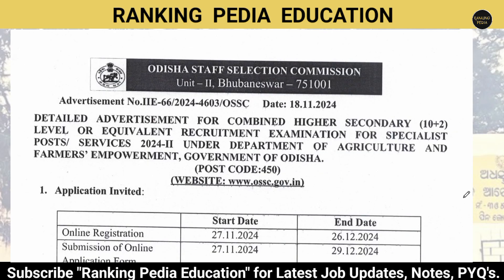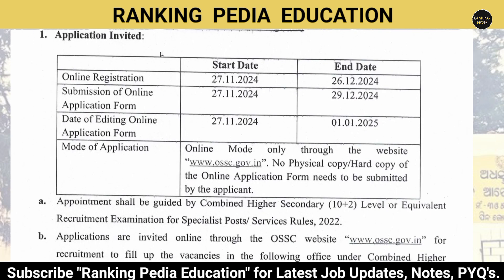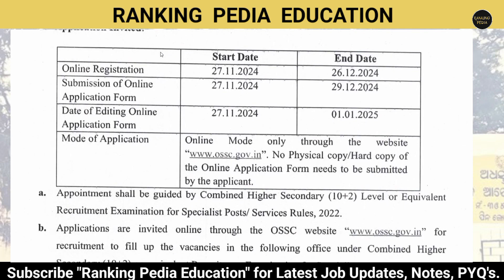Odisha Staff Selection Commission has announced this recruitment. Before discussing the post, here are some important dates. Online registration will start from 27th November 2024 and the last date is 26th December 2024.